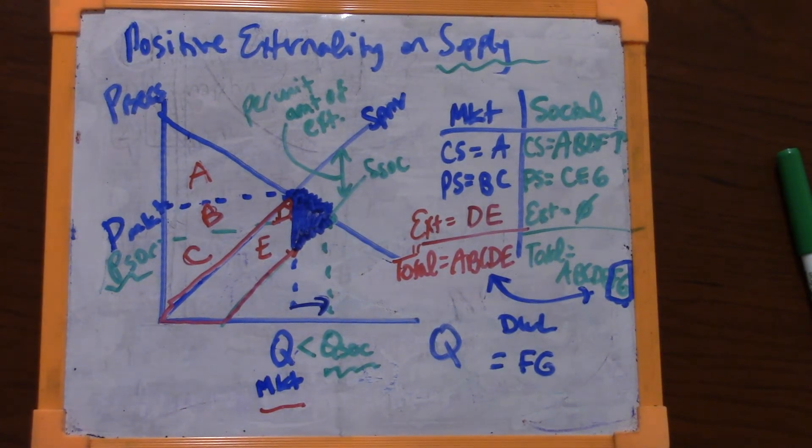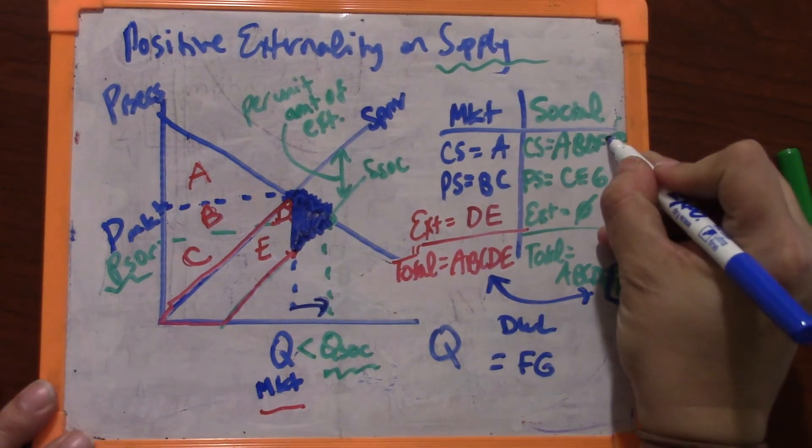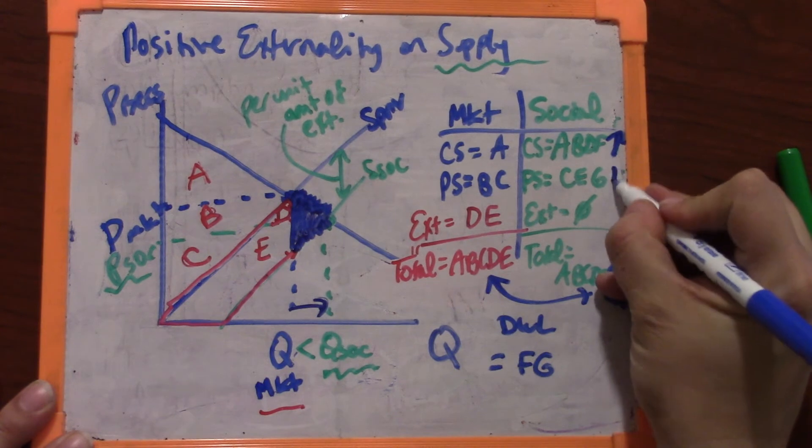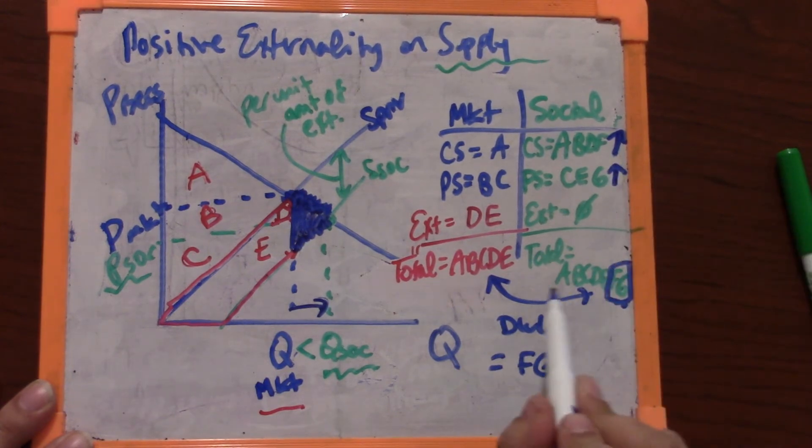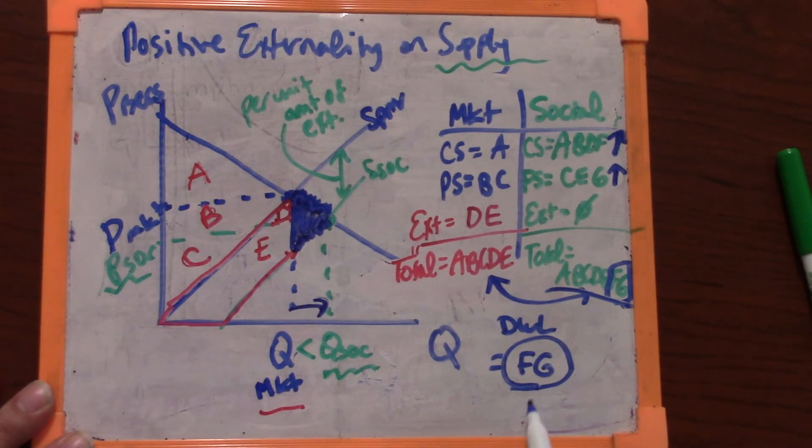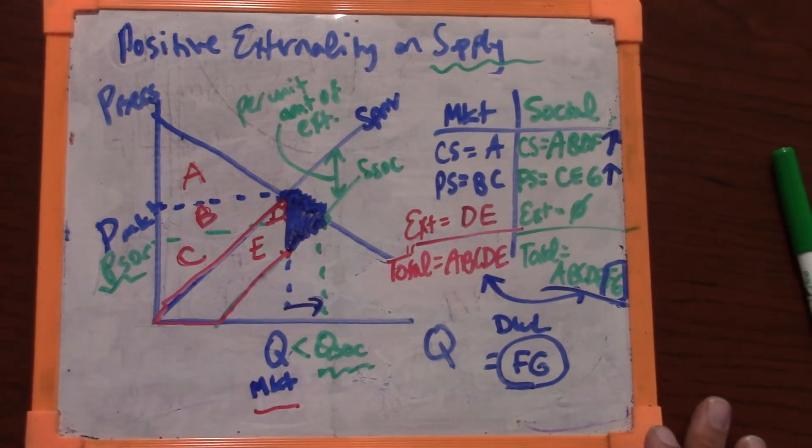Okay, so that is how to use letters to arrive at our estimate of the inefficiency created by this externality. Again, at the social outcome, consumers are better off, producers are better off, and society as a whole is better off because total surplus is higher. So the market is forcing this inefficiency of FG by not producing more bees, even though the benefits of those bees would exceed their true cost.